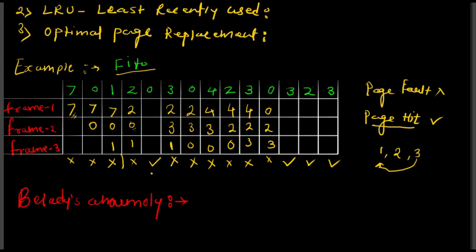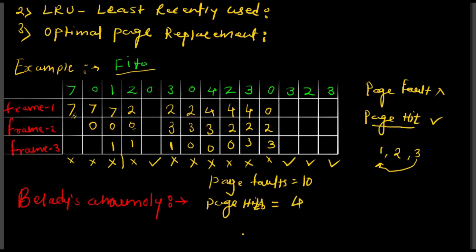Now count the total page faults: 1, 2, 3, 4, 5, 6, 7, 8, 9, and 10 — page faults equal 10. Page hits equal 4. This is the FIFO algorithm. Remember the pattern: replace first from frame 1, then frame 2, then frame 3, then repeat in a circular order — 1, 2, 3, 1, 2, 3. In this way pages are replaced from memory.